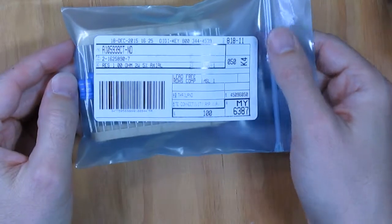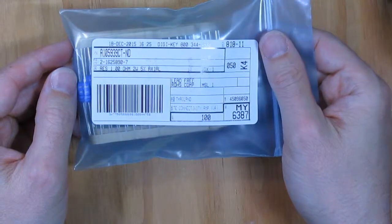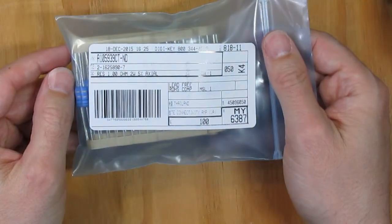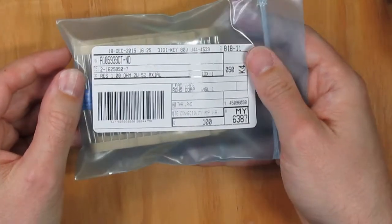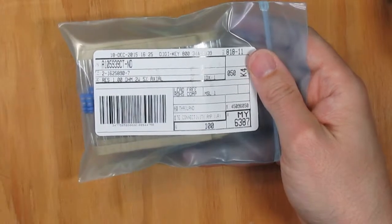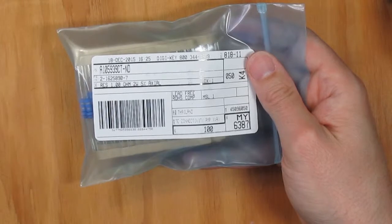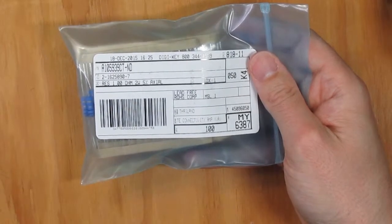For the resistors, because you need fairly high precision resistors for this, it's probably best to order through one of the major supply houses. I ordered from Digikey, but there's also others like Mouser. You can get some of these components from places like Amazon or eBay if you can find components of the appropriate tolerance.